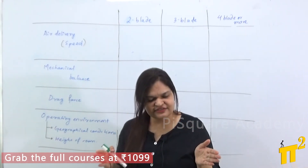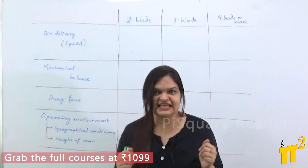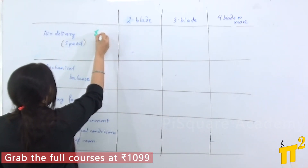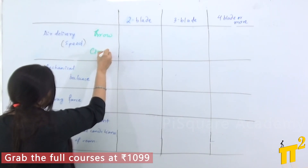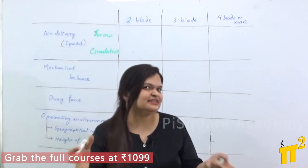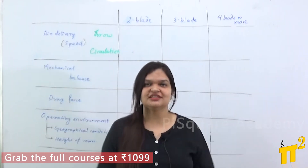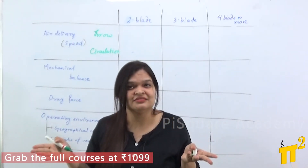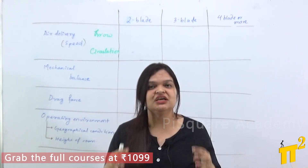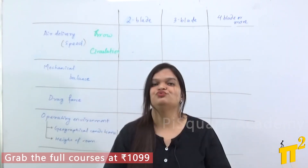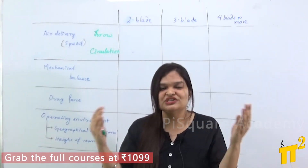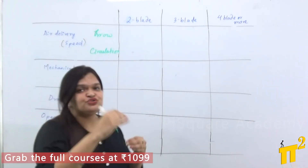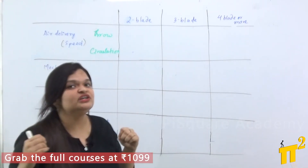I can divide this air delivery into two main types. One I can call a 'throw' and another I can call a 'circulation.' By throw, I mean vertical circulation. And by circulation, I mean horizontal circulation. When you need a throw, you need more speed or more air to be forced towards us. When you need circulation or horizontal circulation, you are just circulating the air around the space.